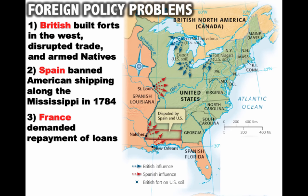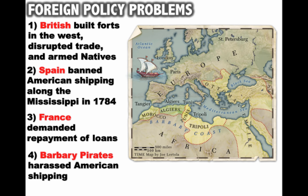There were also problems with former allies France, who started demanding repayment of loans given to us during the American Revolution, and they would eventually have their own revolution — the French Revolution — which would cause a lot of problems later on. Then lastly, pirates were also causing problems in this early period. The Barbary pirates in North Africa in the Mediterranean Sea started harassing American shipping. Previously we had the protection of the powerful British Navy, but now we had to do our own fighting and weren't equipped to deal with these multiple threats.